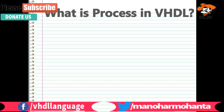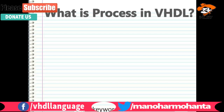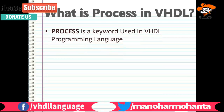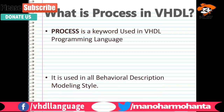Today we will be clearing up why people use process once, twice, or more times. A process is a keyword used in the VHDL programming language. In Verilog we never use it — in VHDL only. And it is only used in the behavioral description modeling style.